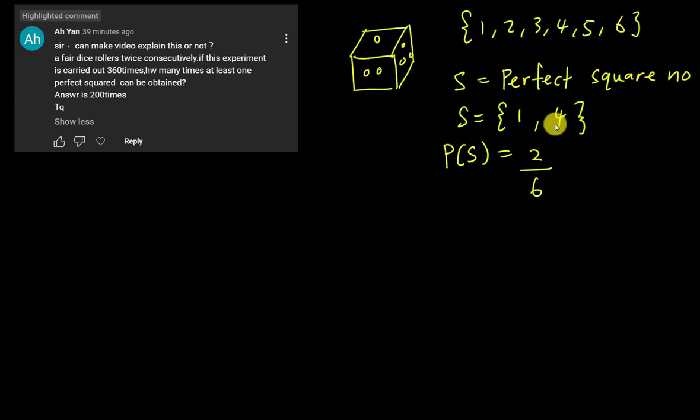So therefore, what is the probability of getting the perfect square number? So it's 2, this one is the sample space, right? So it's 2 out of 6. Where do I get 2? Basically, because I have 1 and 4. 6 is because I have 1, 2, 3, 4, 5, 6. So I have 6 choices here. But here, I have 2 options. So after simplify, I know the probability of getting a perfect square number is 1 over 3.